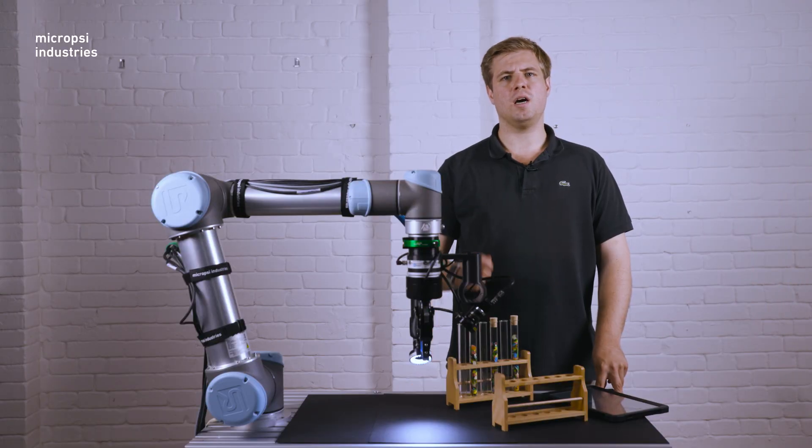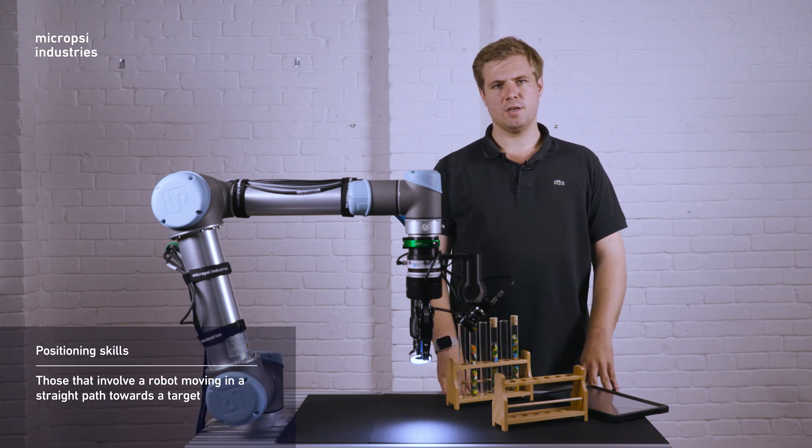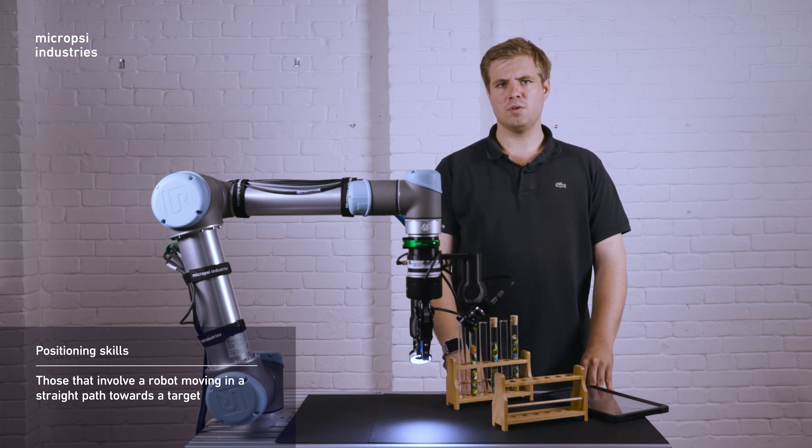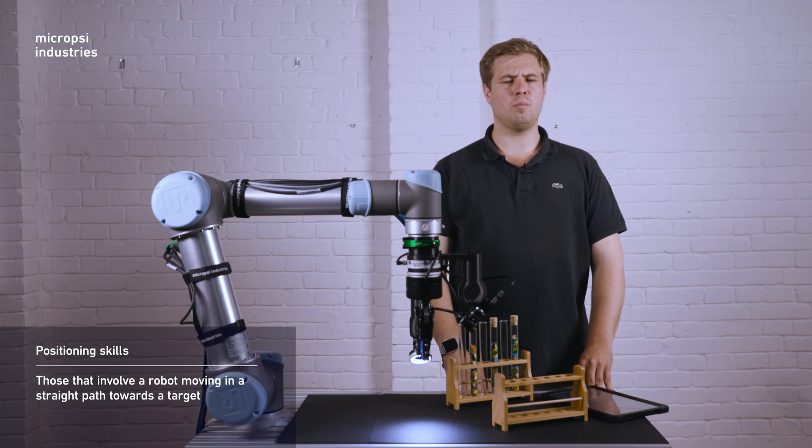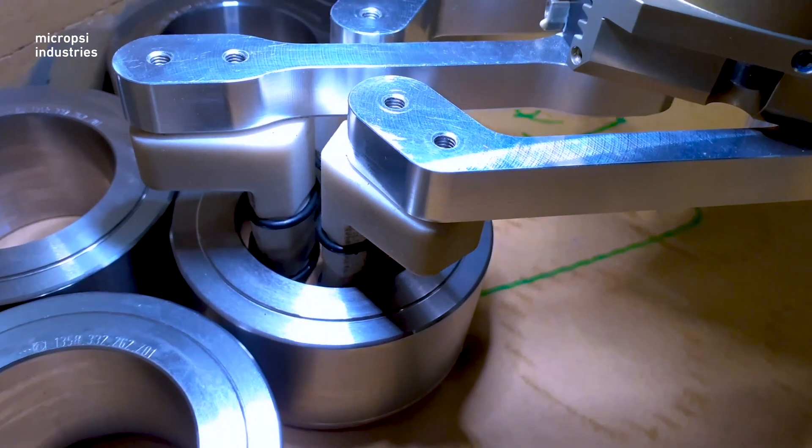There are two types of Mirai skills. One type is a positioning skill. Positioning skills are those that involve a robot moving in a straight path towards a target. Positioning skills are useful for placing a gripper of an object in an unpredictable position.